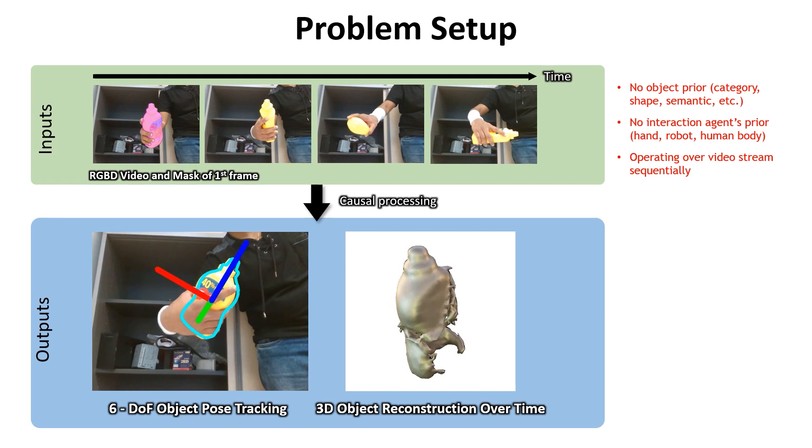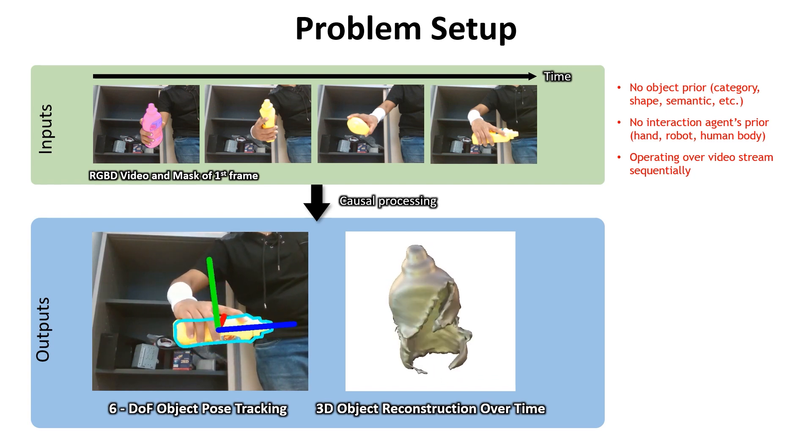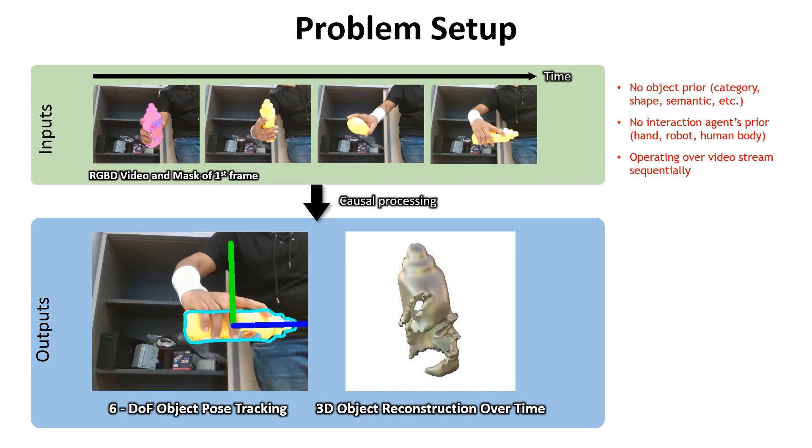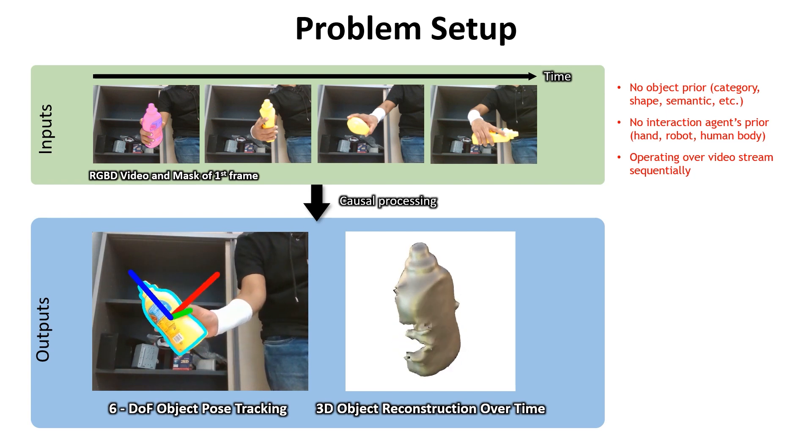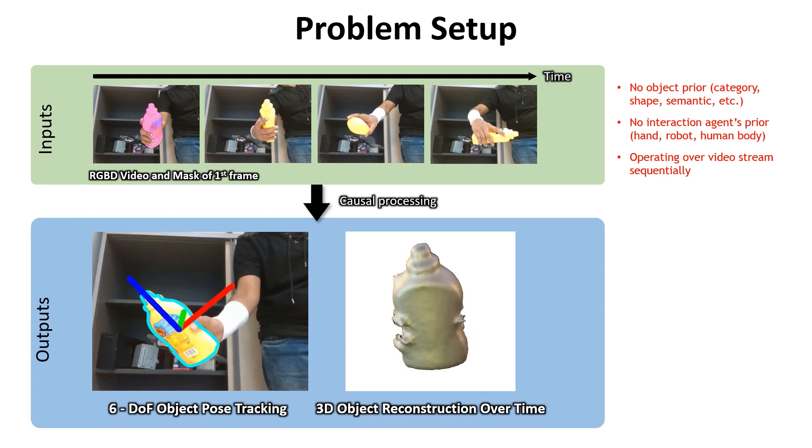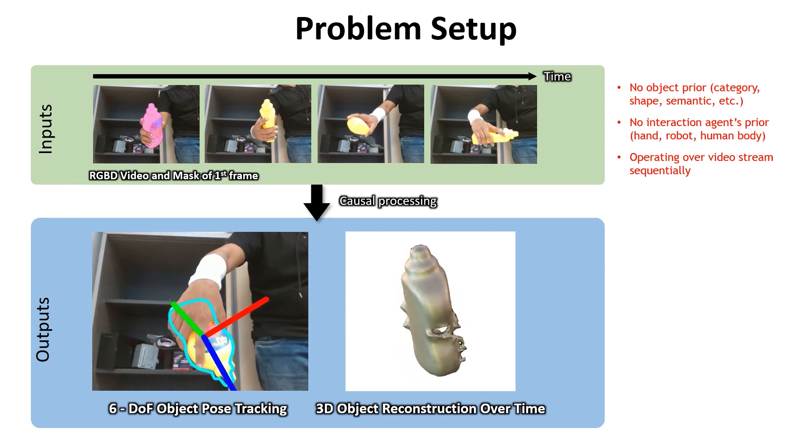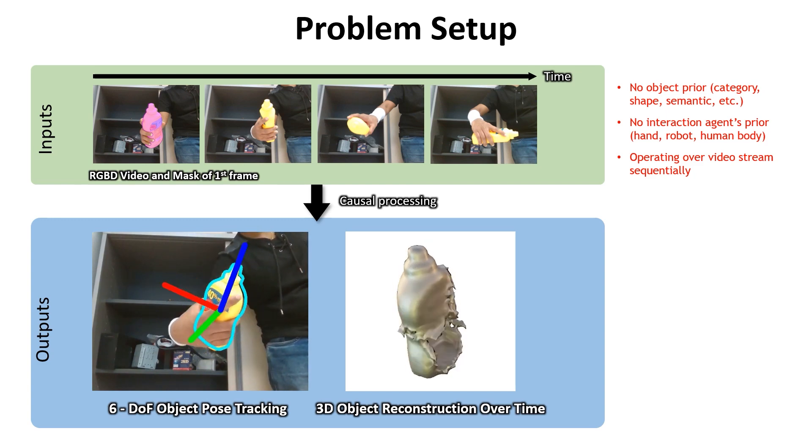In particular, our method does not assume object priors such as category, shape, or semantics. It also does not assume interaction agents' priors and performs causal processing over the video stream sequentially without accessing future information.